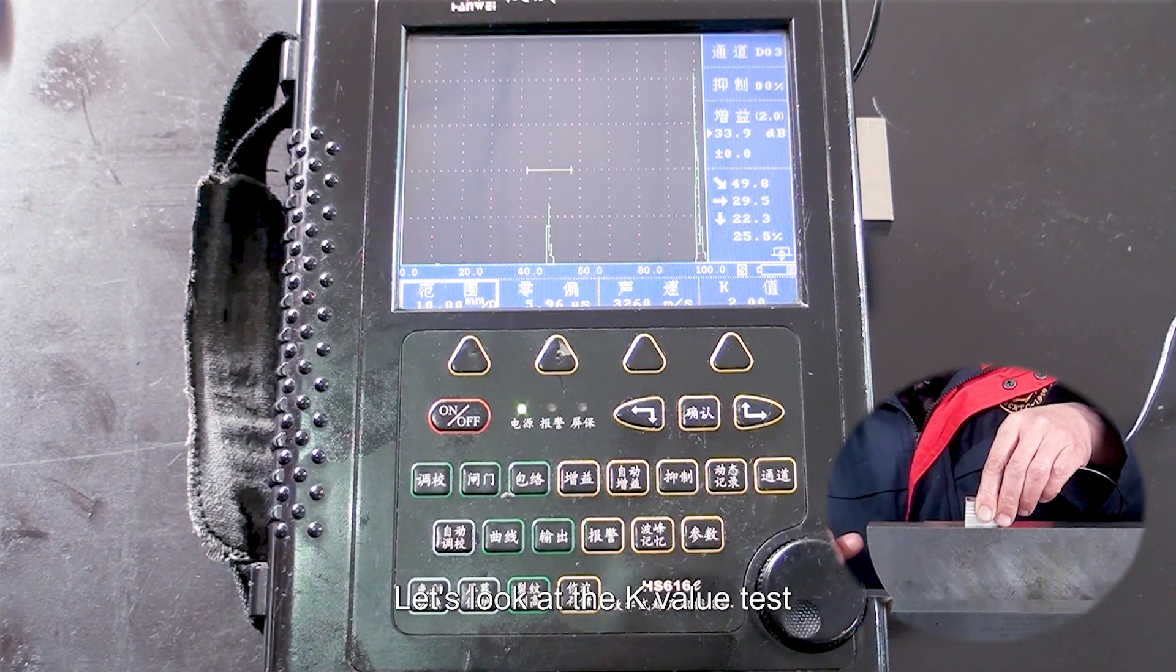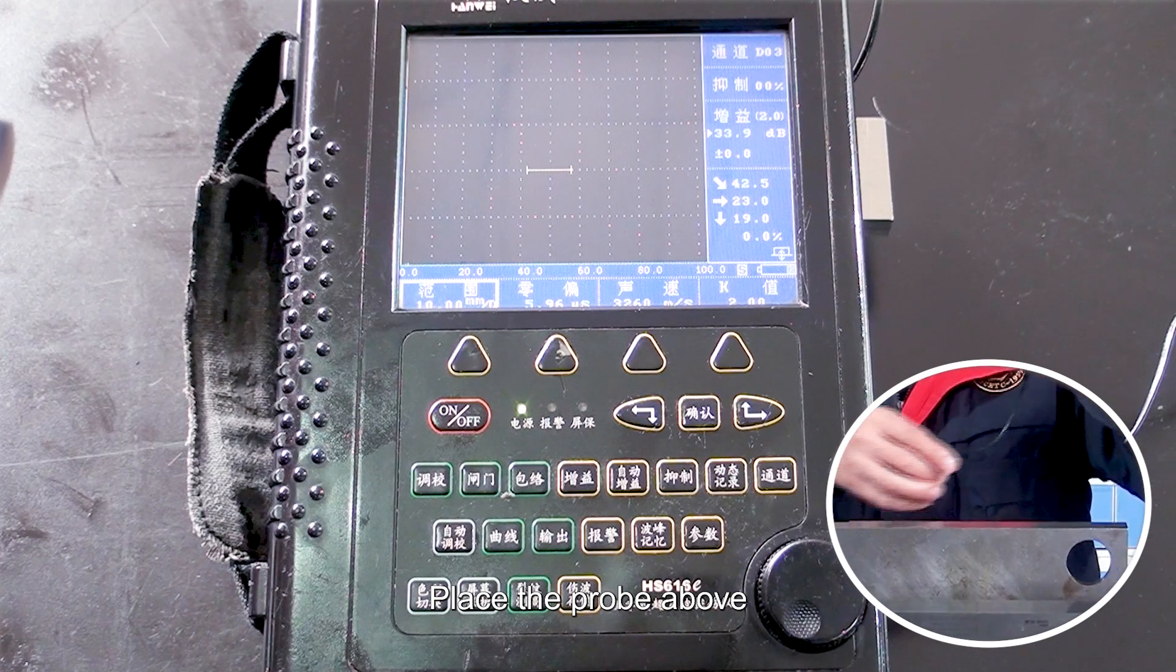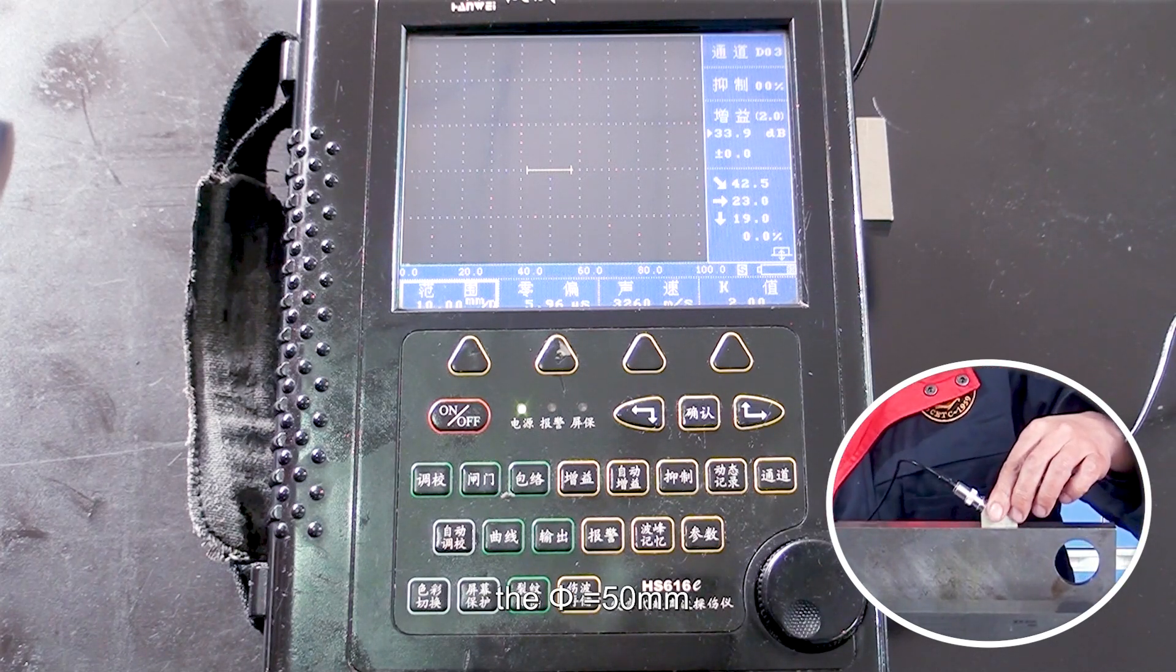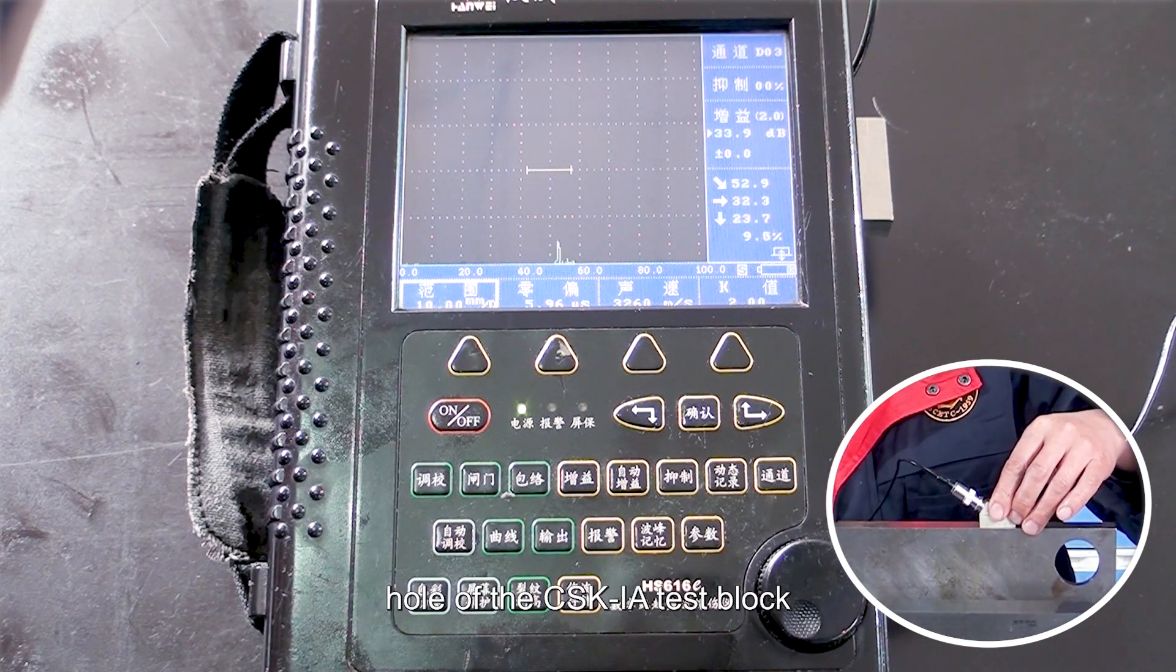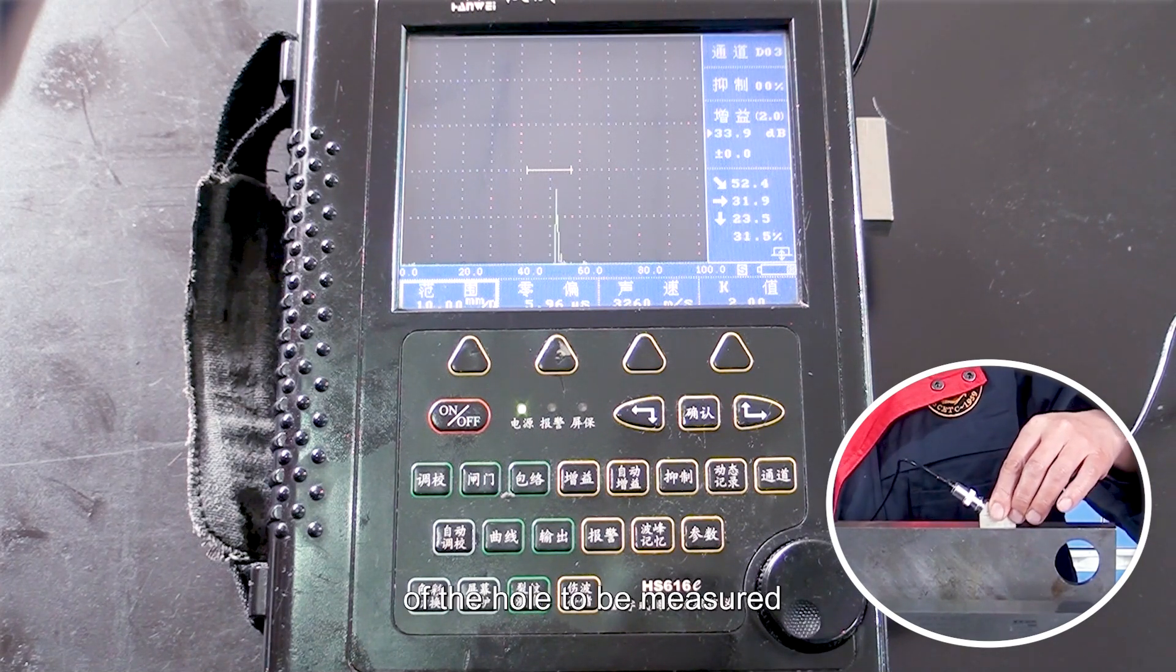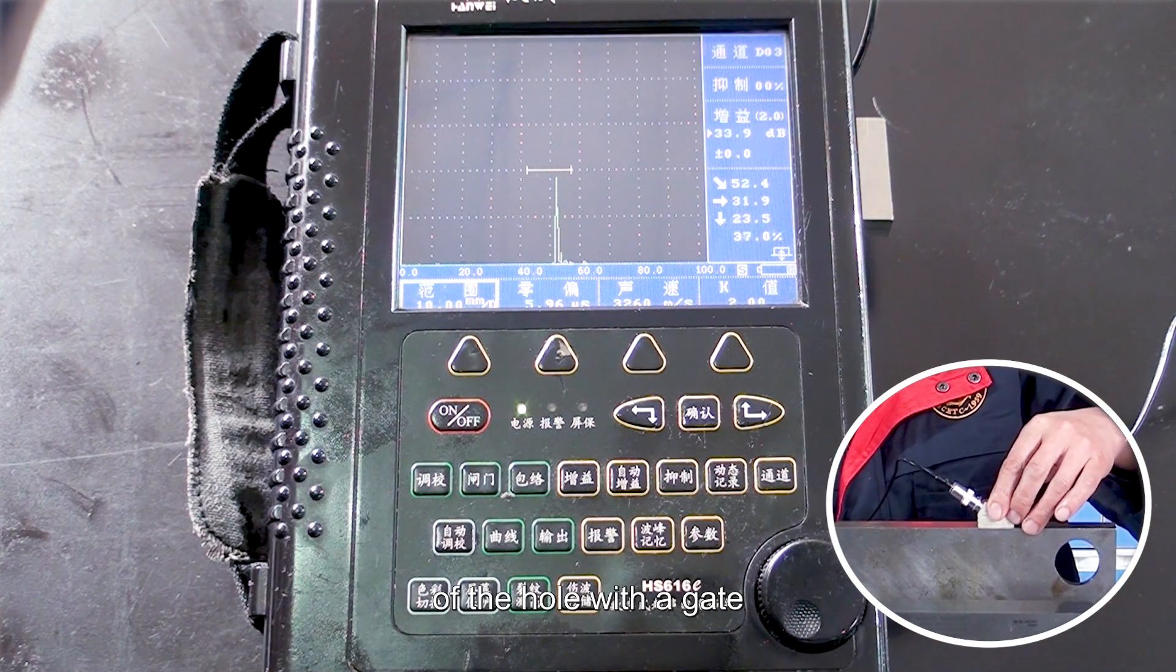Next, let's look at the K-value test. Place the probe above the phi is equal to 50 mm hole of the CSK-IA test block, and find the reflective wave of the hole to be measured.